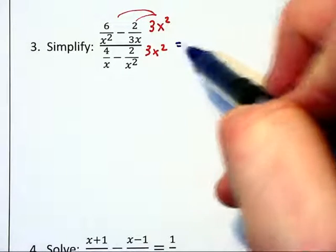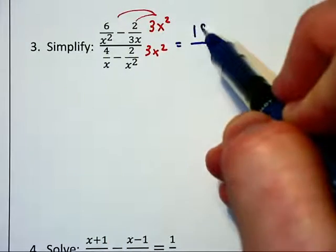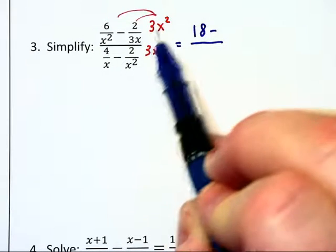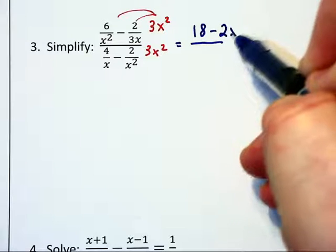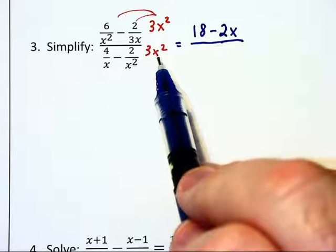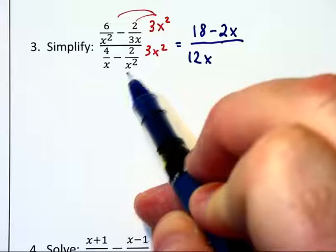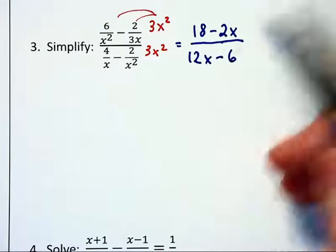In the top left corner, the x squareds cancel, leaving 6 times 3, which is 18, minus the top right corner. 3 and x will cancel, leaving another x times 2, so minus 2x. Down in the denominator, one of the x's cancels. We'll have 3x times 4, which is 12x, and then the x squareds will cancel altogether, leaving 3 times 2, so minus 6.